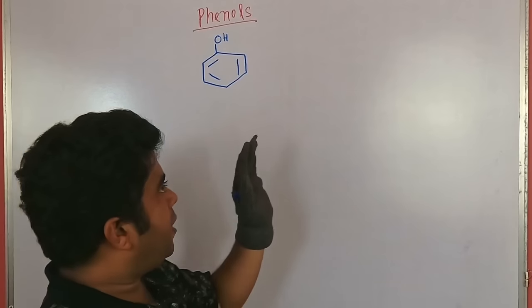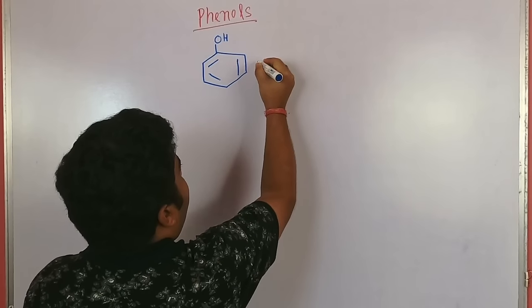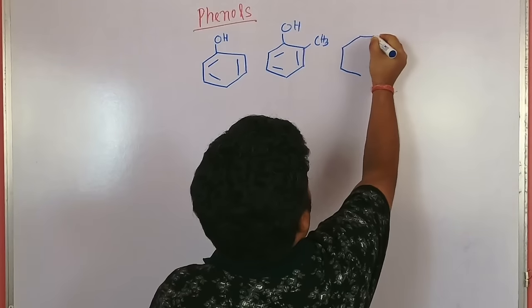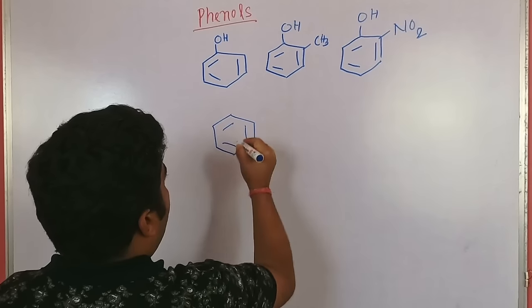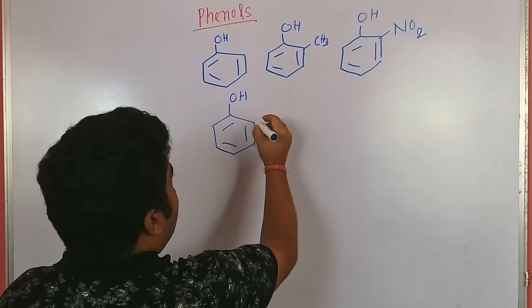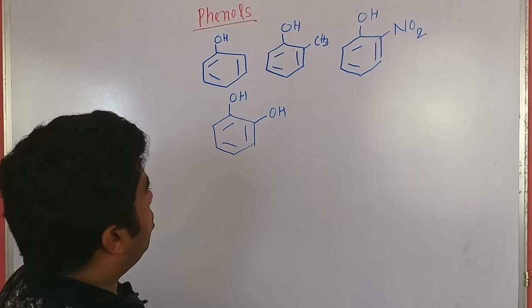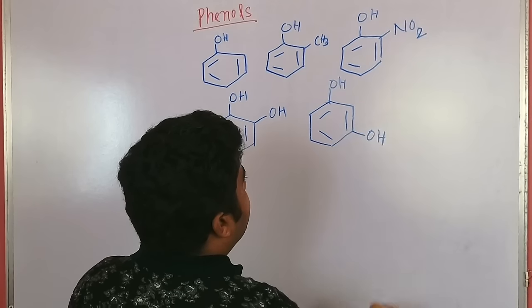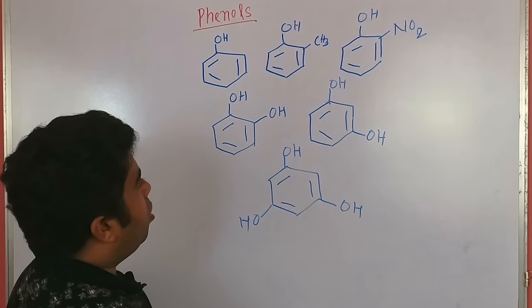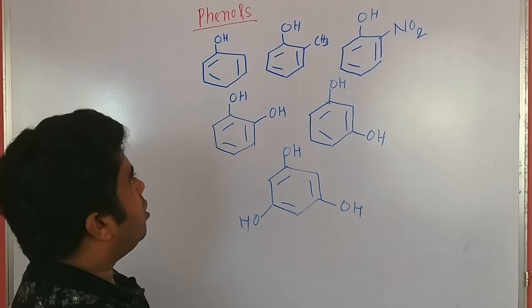Phenols are classified by various substituents. If a methyl group is present, it is known as methylphenol. If a nitro group is there, it is nitrophenol. If more than one hydroxy group is present, it is dihydroxyphenol. Orthodihydroxy is known as catechol, meta is resorcinol. If three hydroxy groups are present, it is trihydroxy or phloroglucinol. These are the various classes of phenol compounds.